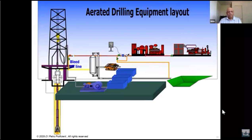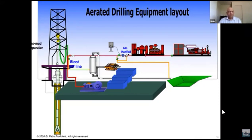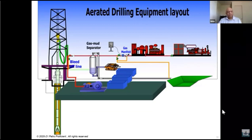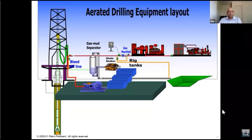Here is a typical setup. The returns go to the shale shaker. You have your mud pumps — a large mud pump system pumping mud — and your air system coming from compressors and boosters. Combined together, the returns go through a gas-mud separator. When returns come out, the gas is vented out and the mud is returned to the shale shaker and then to the tank, where it is recycled and reused.